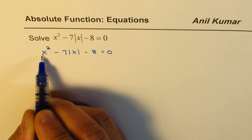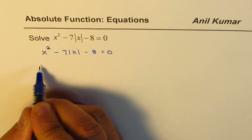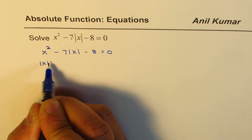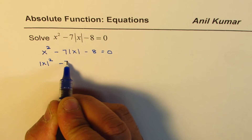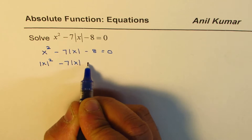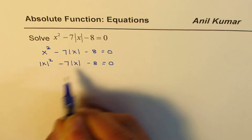Now, x squared is always positive, so I could also write this as absolute x whole squared, minus 7 absolute x minus 8 equals to 0.